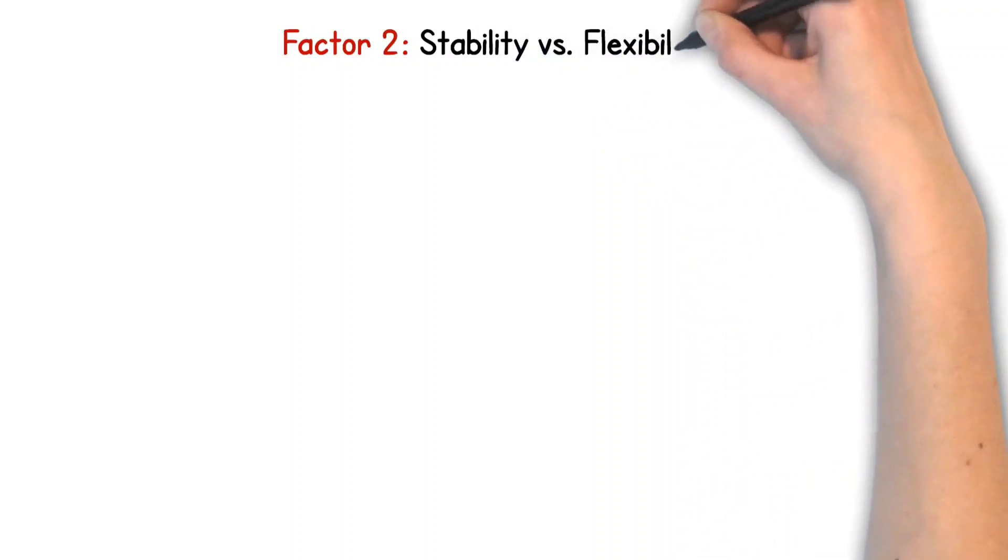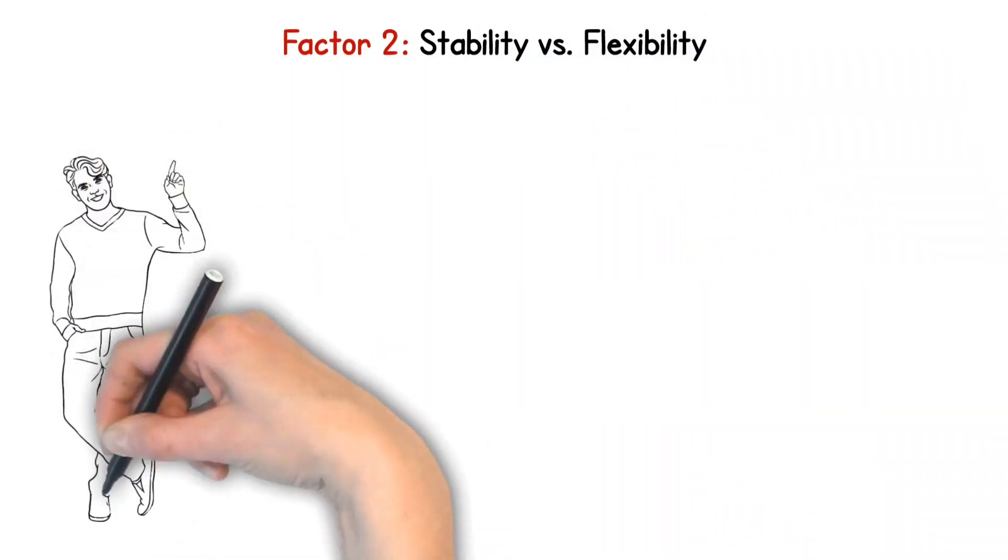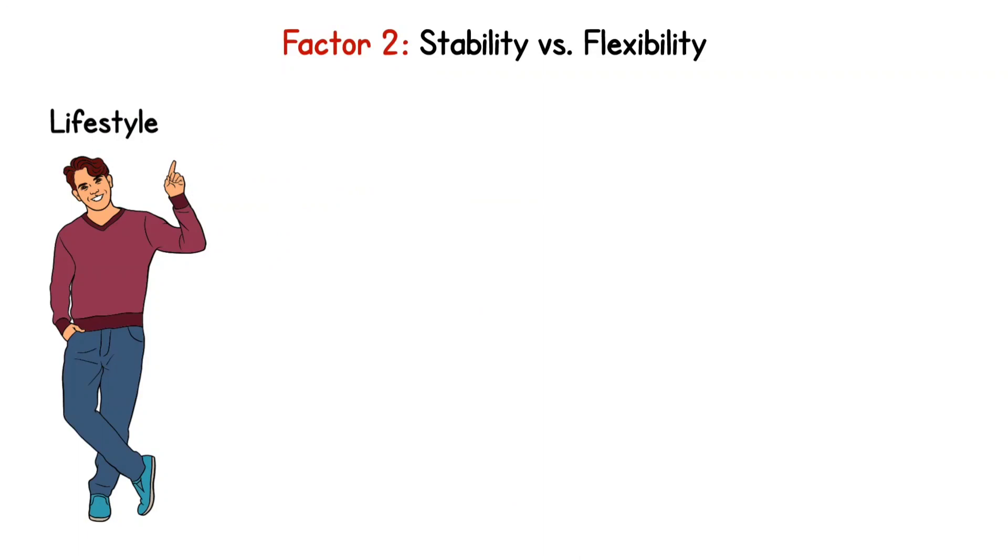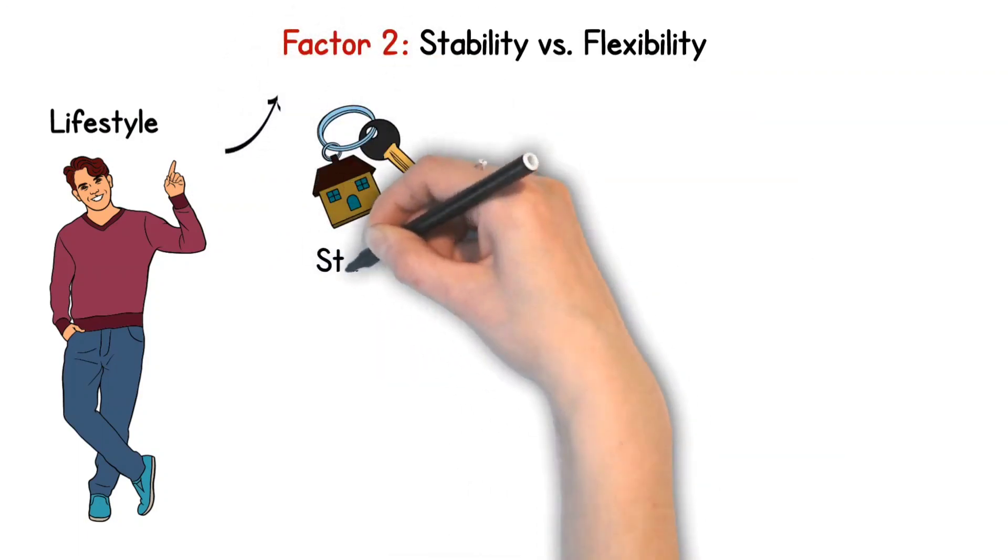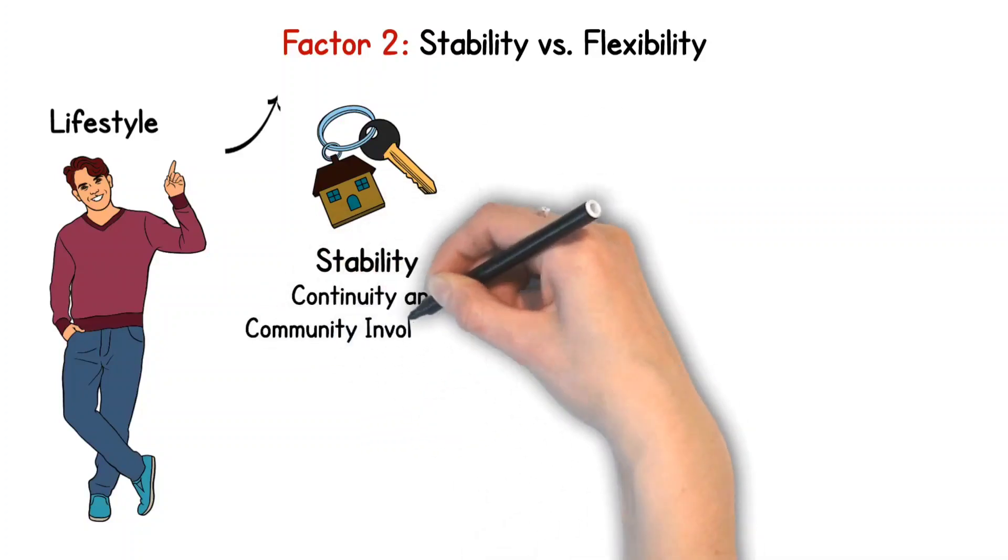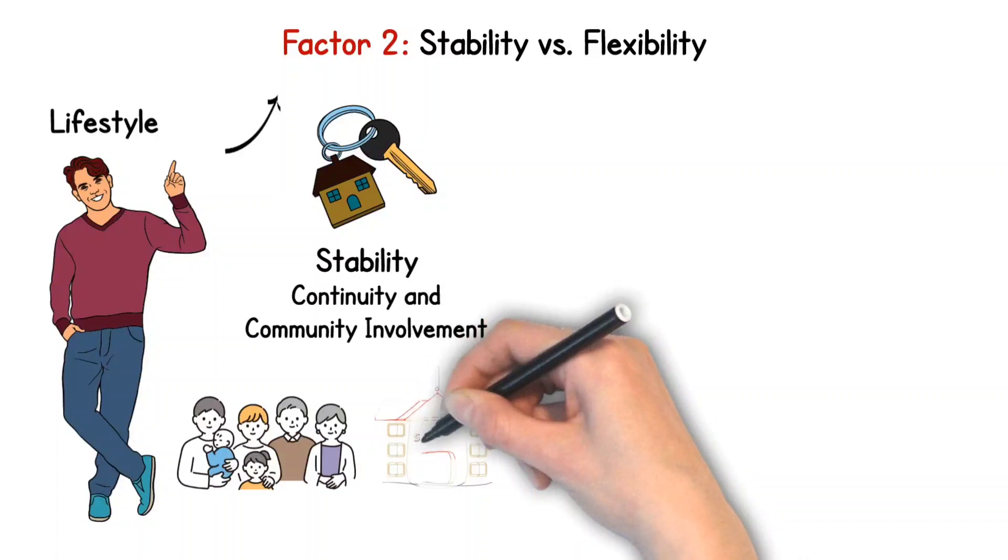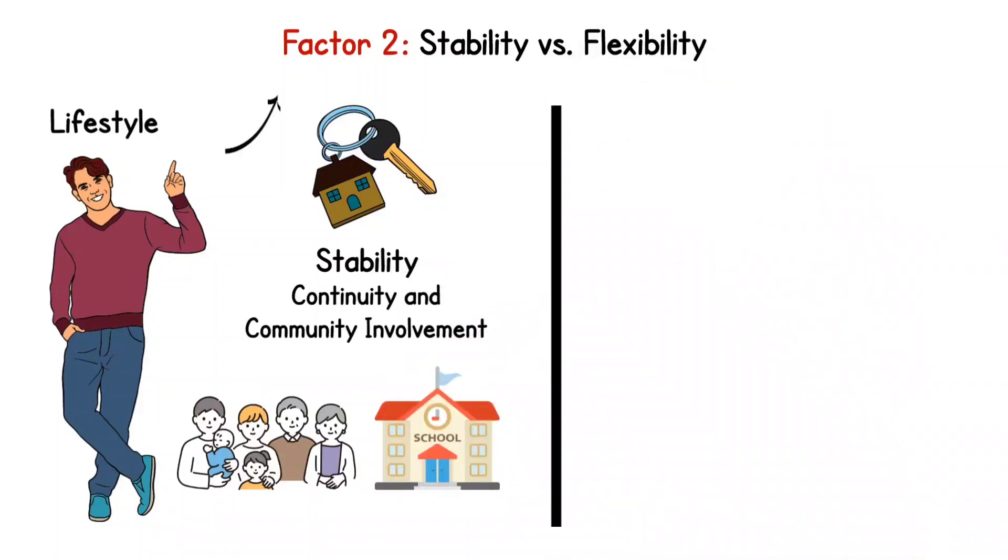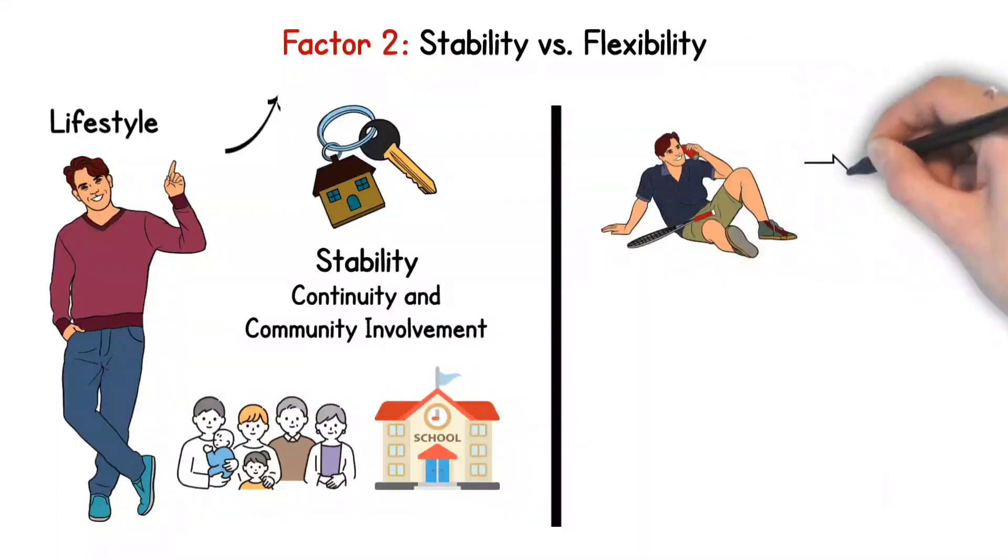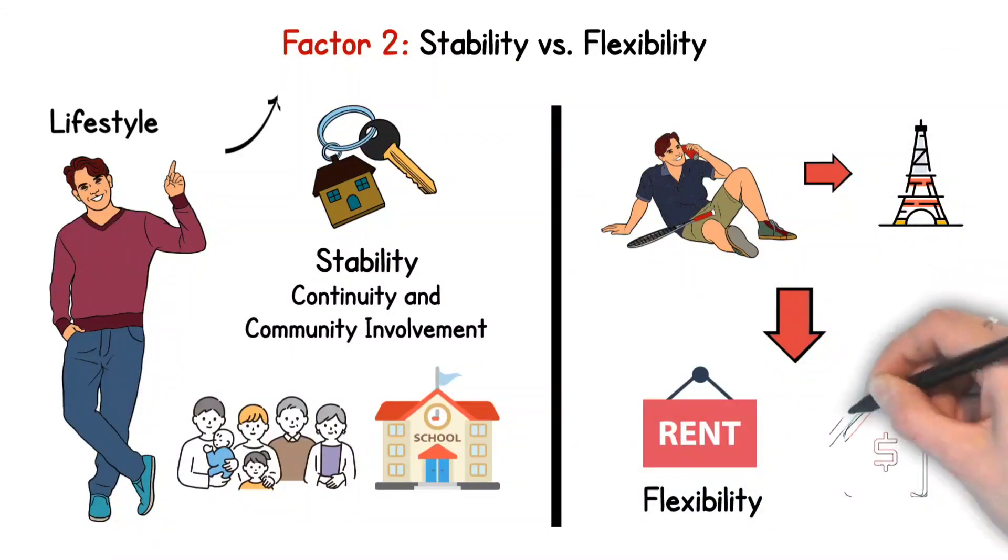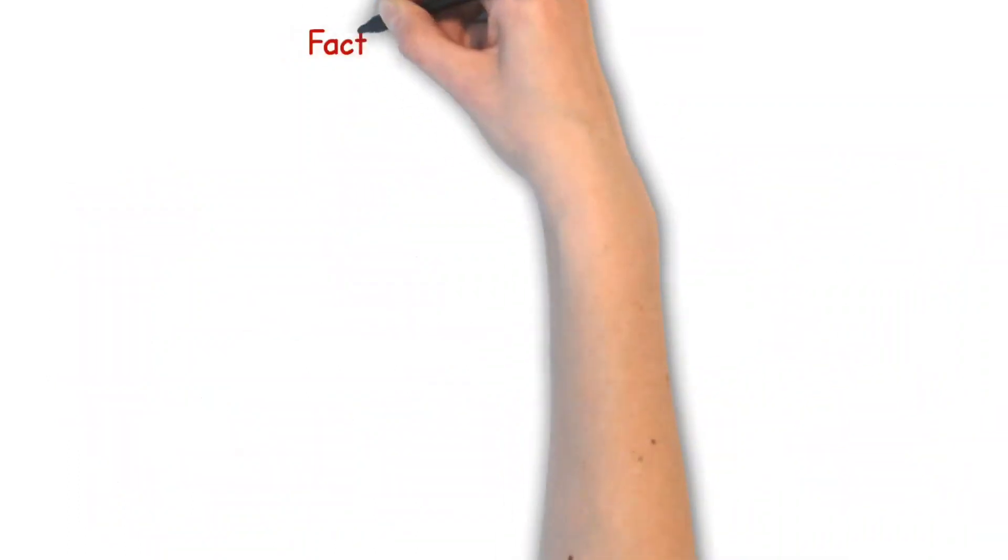Factor 2. Stability vs. Flexibility. Another significant factor to consider is your lifestyle and what you value more, stability or flexibility. Buying a home can provide a sense of stability, continuity, and community involvement. It can also be beneficial for families looking to settle down in a particular school district. Conversely, if your career or lifestyle requires you to be mobile or if you're not quite ready to put down roots, renting offers the flexibility to move without the hassle of selling a home.